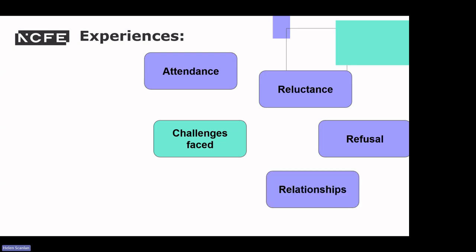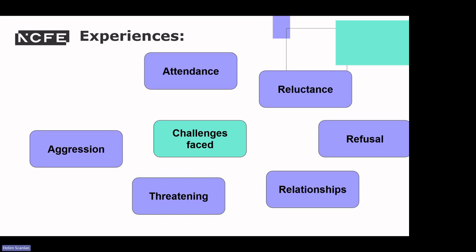Moving on to learner relationships — my experience has shown that learners, especially teenagers, make friends, build relationships and have fallouts on a regular basis, and this can have a huge impact on progress in the learning environment. Threatening behaviour is my next example — learners threatening each other or the teaching staff can obviously have a very negative impact. Taking threats further, aggressive behaviour — whether within the group or towards teaching staff — means we'll need to refer to organisational policies and procedures. And finally, vandalism — learners damaging property can create issues and disrupt learning. The level of damage can also cause different levels of concern.